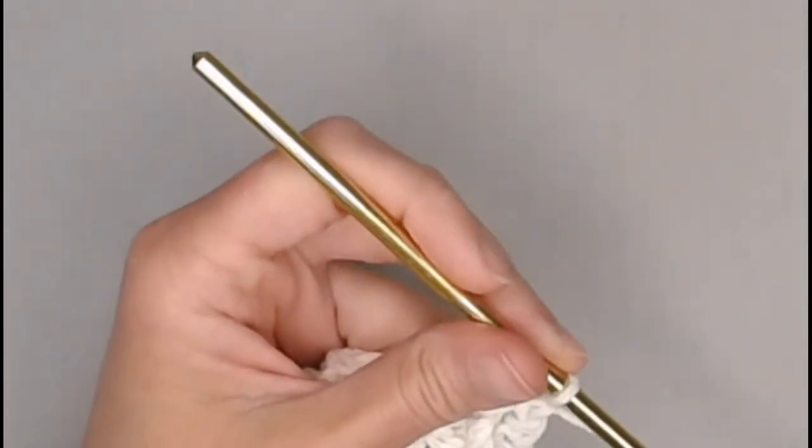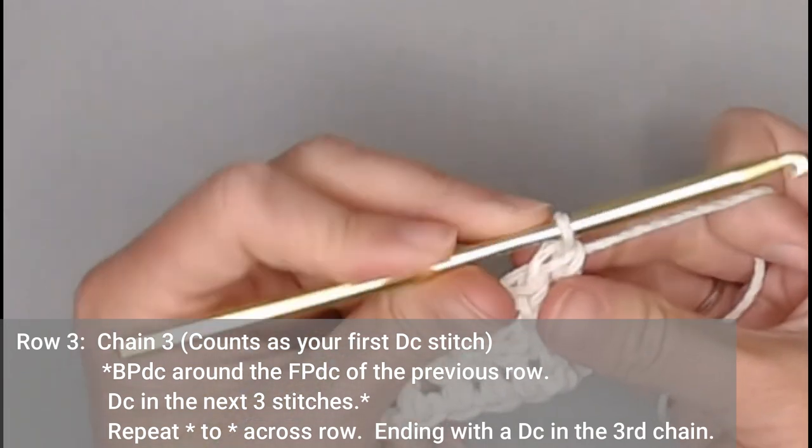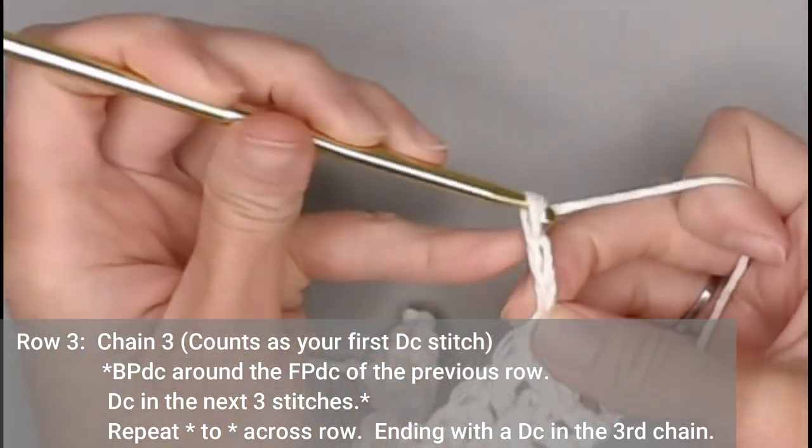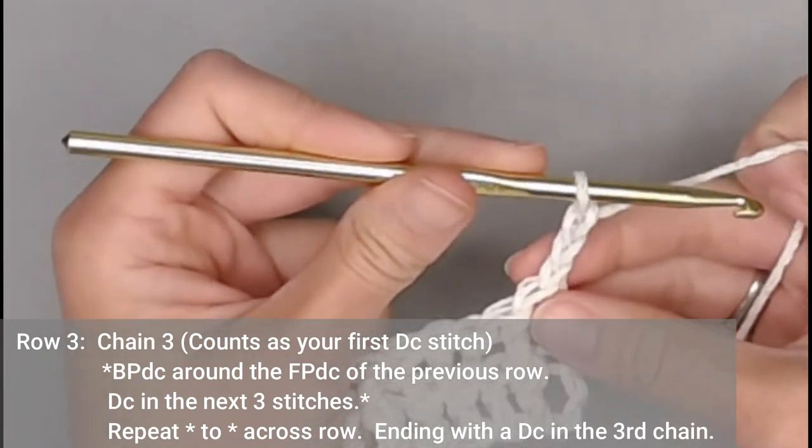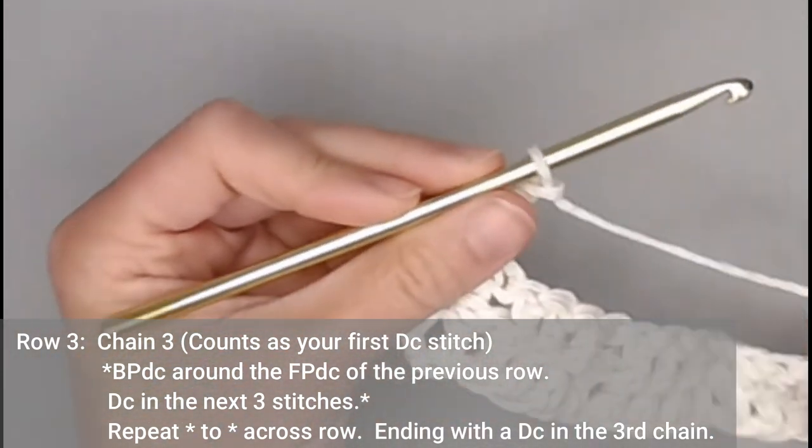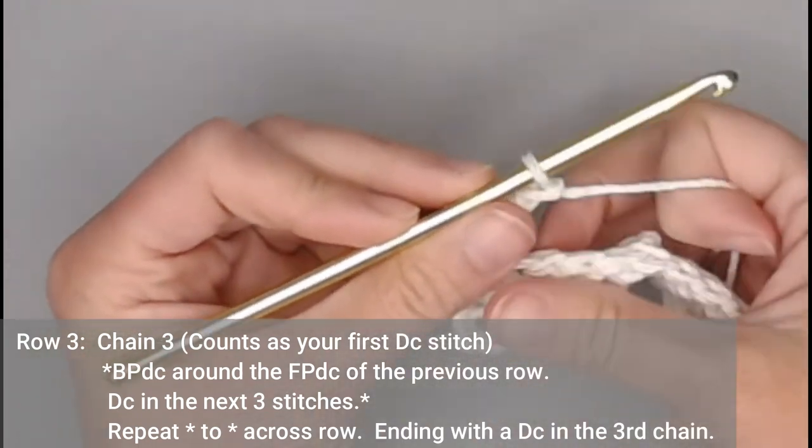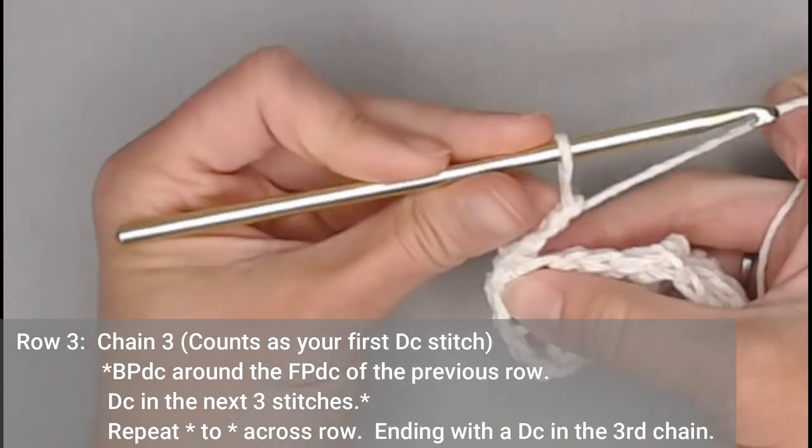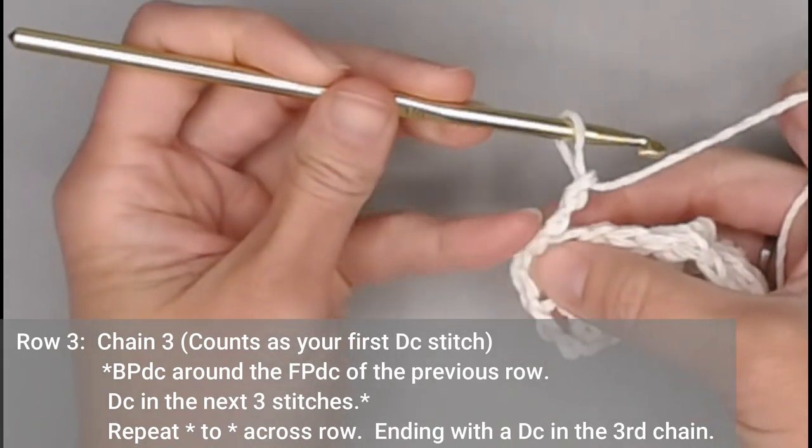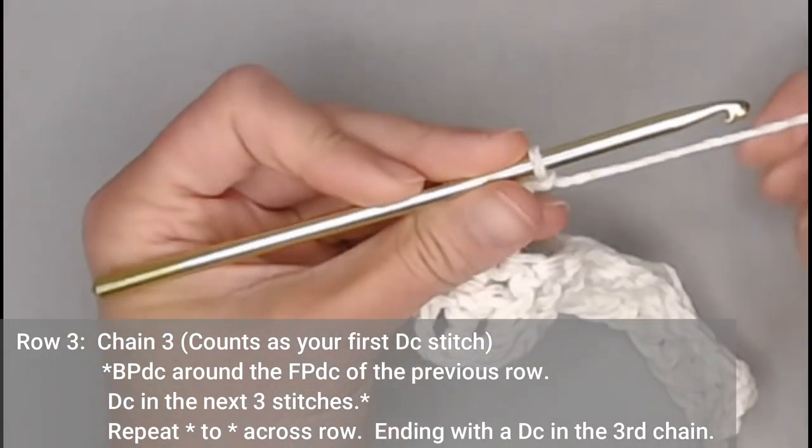All right, let's move on to row three. For row three, again, we chain three. One, two, three. It's how you begin every row, with a chain three. That chain three counts as a stitch of every row. We will skip that first double crochet stitch on the side, because that chain three counts as the double crochet stitch, taking that space.